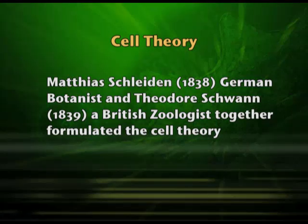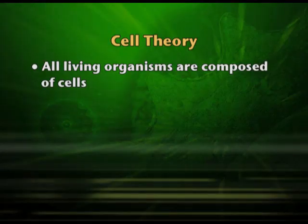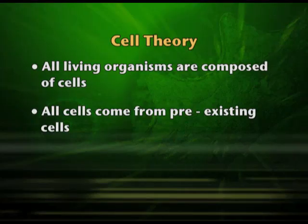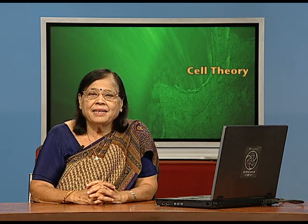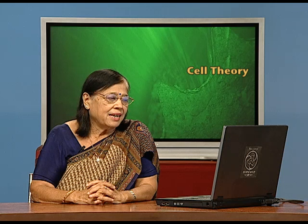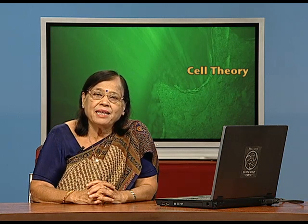Around 1838, Schleiden, and 1839, Schwann — these two scientists gave us cell theory. They said that all living organisms are composed of cells; whether animal or plant, cells are the building blocks. The second point: all cells can come only from pre-existing cells. There should be a cell which will give rise to a new cell. A cell can be made only from a pre-existing cell, so there should be a cell which will give rise to more cells.